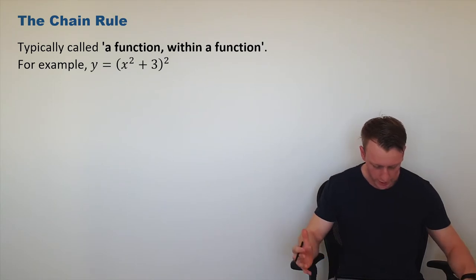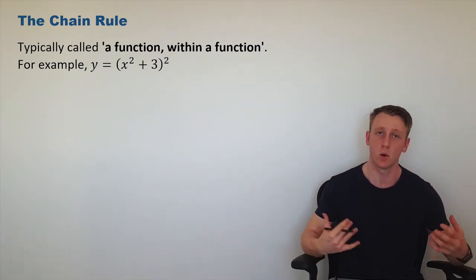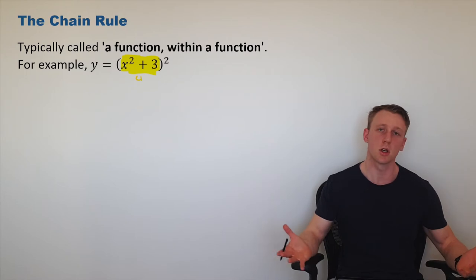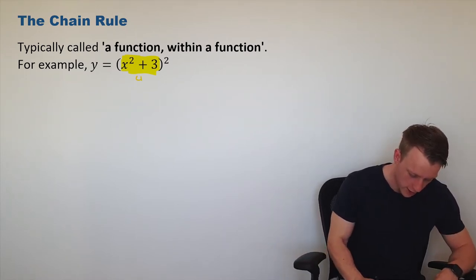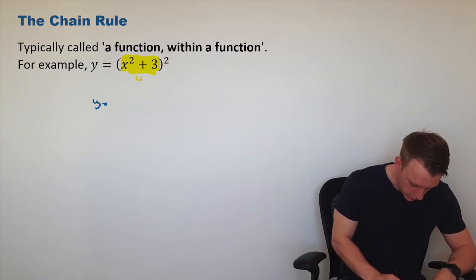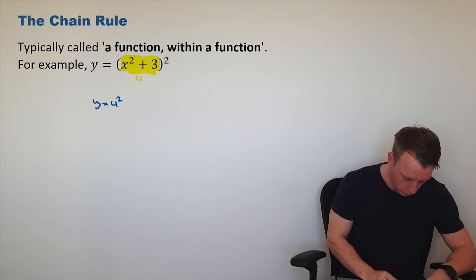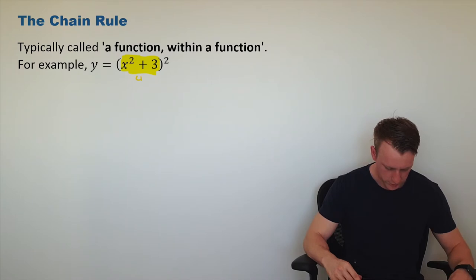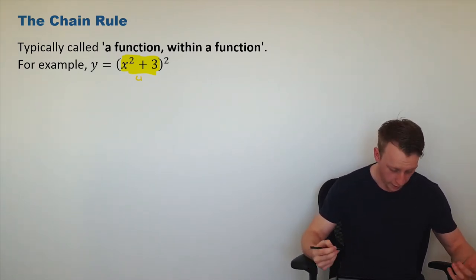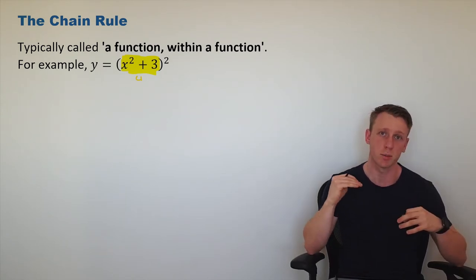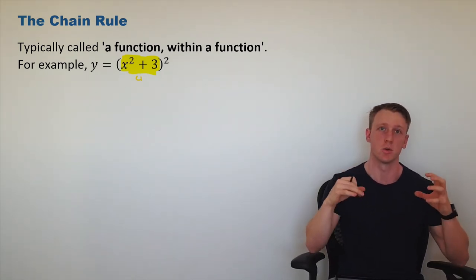For example, we can see here we've got y equals x squared plus 3, all squared. If I highlight the stuff in the brackets, I'm just going to call it u for the time being. If I said our function here was just u squared, you would be able to differentiate that — you would use the power rule and say that it is 2u. However, that's not the function we have. We have x squared plus 3, all squared. So it's a function, x squared plus 3, within a function which is being squared.